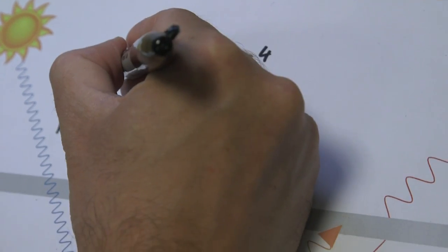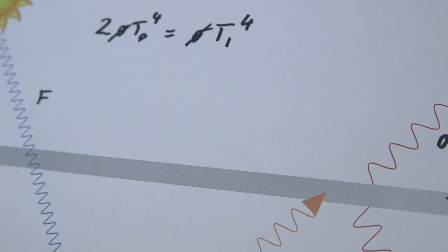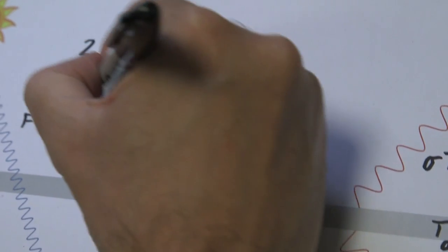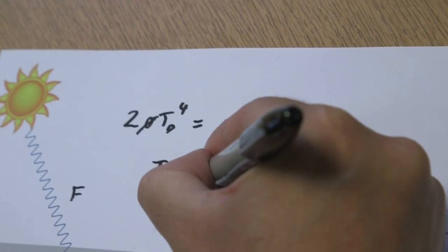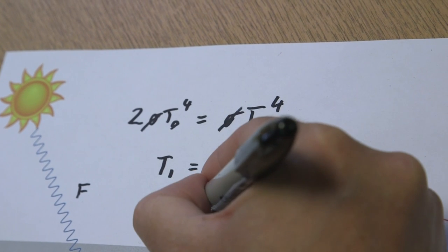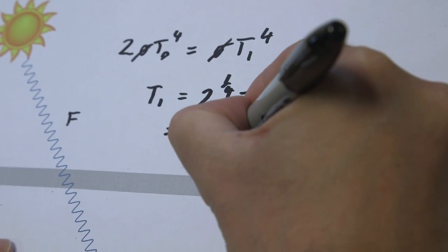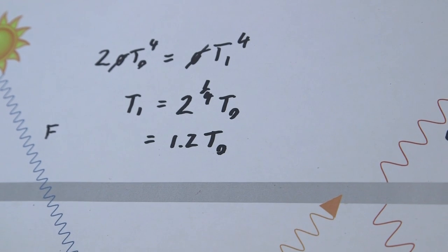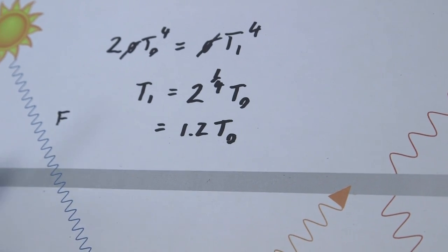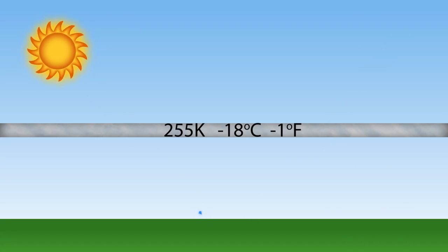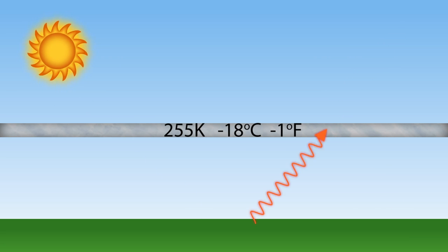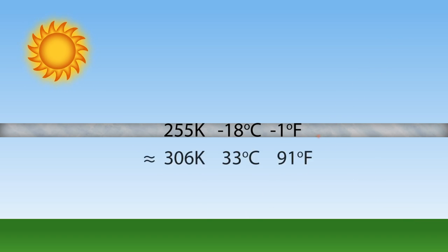We can do a little mathematics, canceling the sigmas on both sides, and then take a fourth root of both sides, which tells us that T1 is equal to 2 to the one-quarter power times T0, which works out to about 1.2 times T0. So this is saying that the actual temperature the Earth heats up to, because of this blanketing layer above our heads, is about 20% higher than it would have been with no atmosphere. That works out — doing everything in Kelvin rather than Centigrade — to the Earth's temperature being about 30 Centigrade.